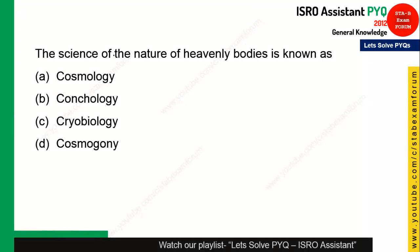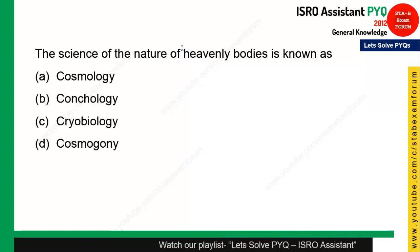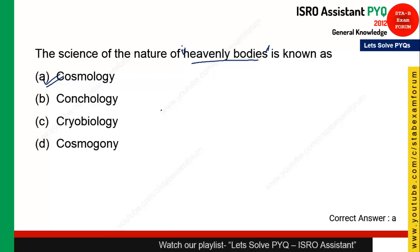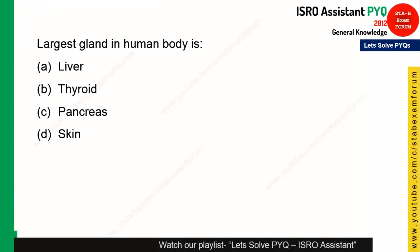The next question: the science of the nature of heavenly bodies is called what? The science of objects present in the universe is called cosmology. Option A is the right answer.